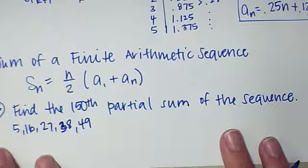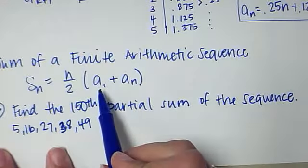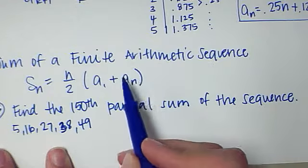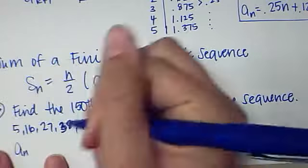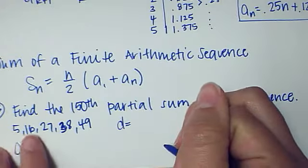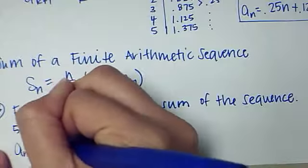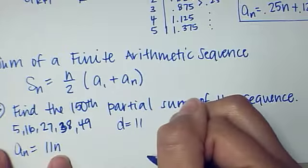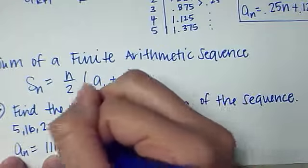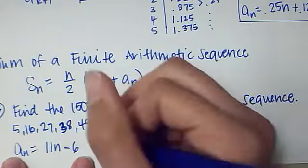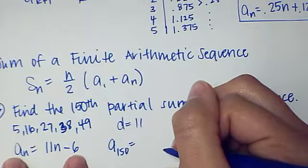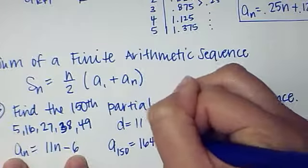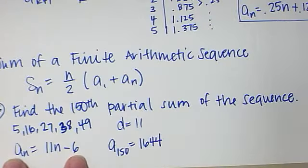The first thing we need to do to get our 150th is we need A1, which is 5, and we need A sub N or A sub 150, which we're going to need to find. To do that we need A sub N. So, the common difference is the first thing we want to find. The difference here is 11, 11, 11, that's the common difference. So, I do 11 times N. If I plugged in 1, 11 times 1 is 11, to make that be 5, I'm going to subtract 6.